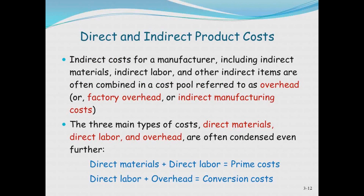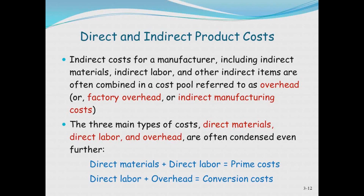Indirect costs combined — for materials, labor, and anything else — are called overhead, also referred to as indirect manufacturing cost or factory overhead. So you now have three main types of costs: direct materials, direct labor, and overhead. Direct labor and direct materials together are sometimes called prime costs. Direct labor plus overhead are often called conversion costs — the cost of converting a raw material into a finished product.